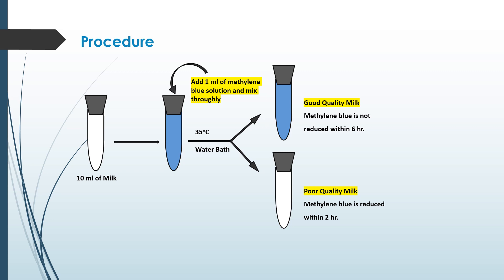Methylene blue reduction test ko perform karne ke liye, aap ek clean dry test tube lenge, usmein aap add karenge 10 ml of milk sample. Then aap add karenge 1 ml of methylene blue solution and mix karenge thoroughly. Then aap incubate karenge is tube ko 35 degree Celsius mein water bath mein. Aur phir aap observe karenge methylene blue ke color change ko.